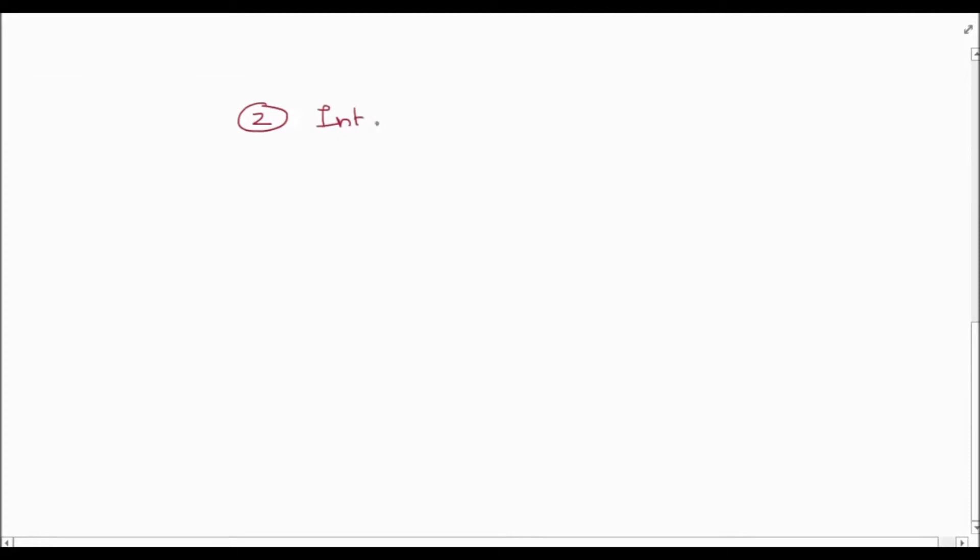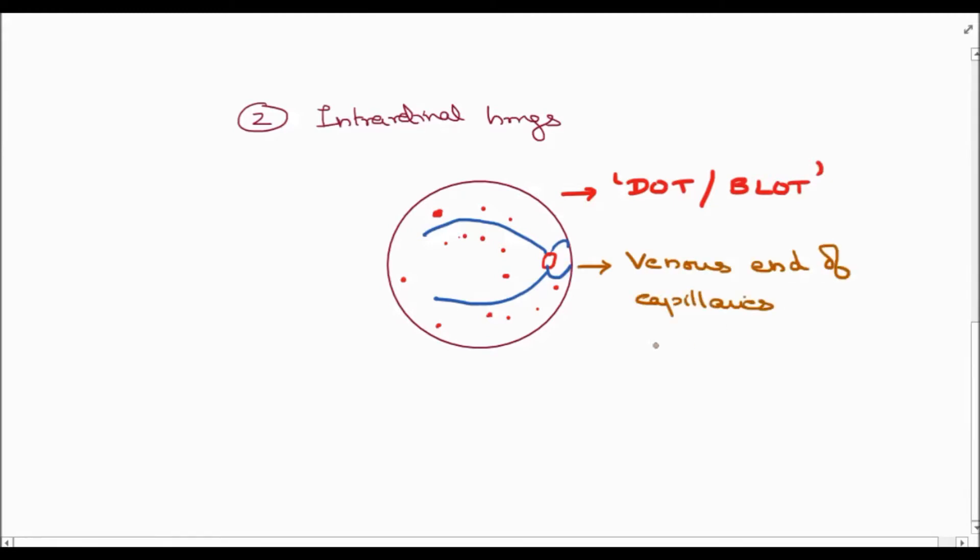Second is the intraretinal hemorrhages. They are usually in dot and blot forms. They appear at the venous end of capillaries and are located in the compact middle layer of retina.